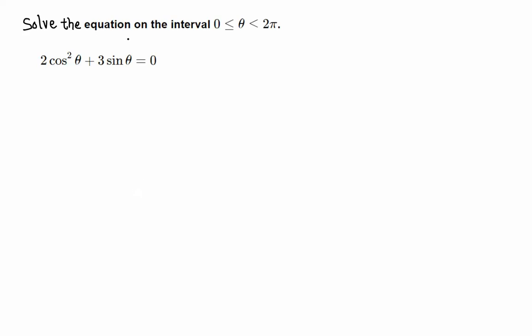Solve the equation on the interval 0 through 2π: 2 cosine squared theta plus 3 sine theta equals 0.